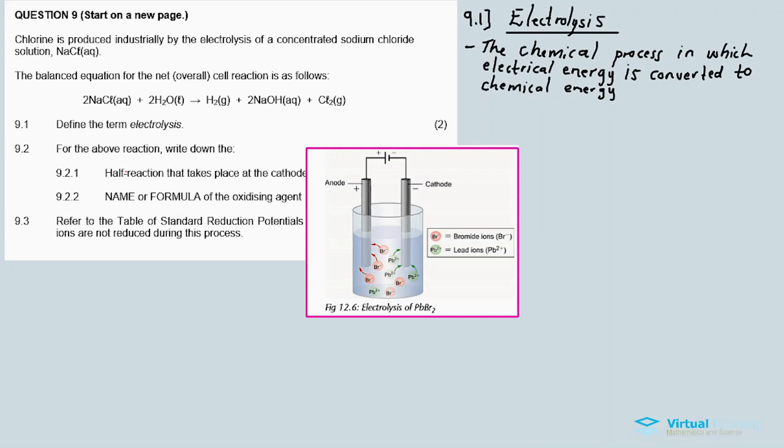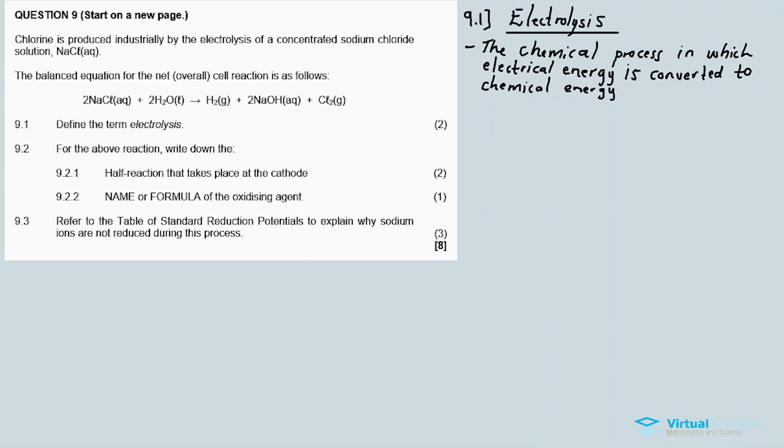So the half reaction taking place at the cathode. So which is reduction. Reduction is taking place at the cathode. So we need to decide between the water and the sodium, in sodium chloride. Which one of the two is actually undergoing a reduction? Right? So any substance that's undergoing reduction, it means it has a higher oxidizing ability. Right?